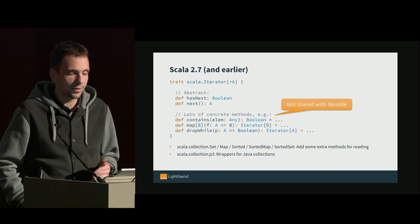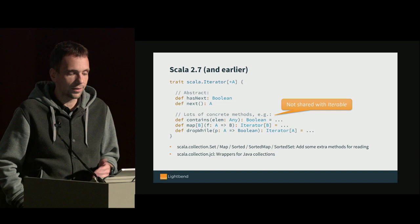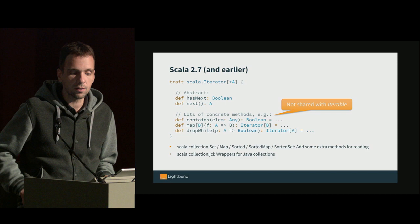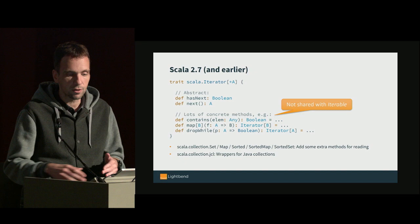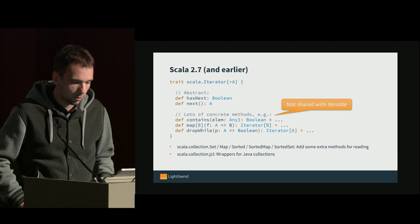Of course you also have traits like scala.collection.Set, Map, SortedMap, SortedSet, and so on. These just add some extra methods which make sense for the specific collection type. And those are further refined into the immutable and mutable types and the implementations, but I don't want to go into those details.